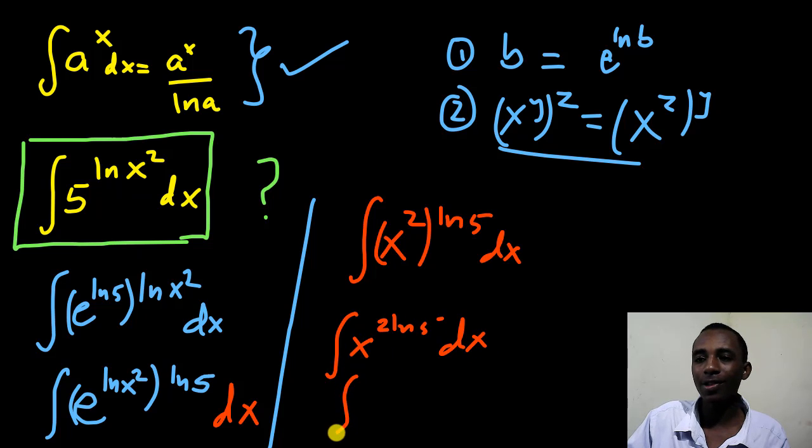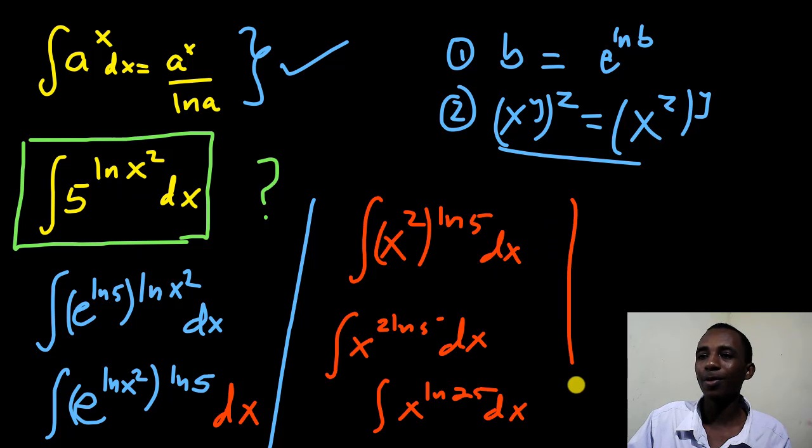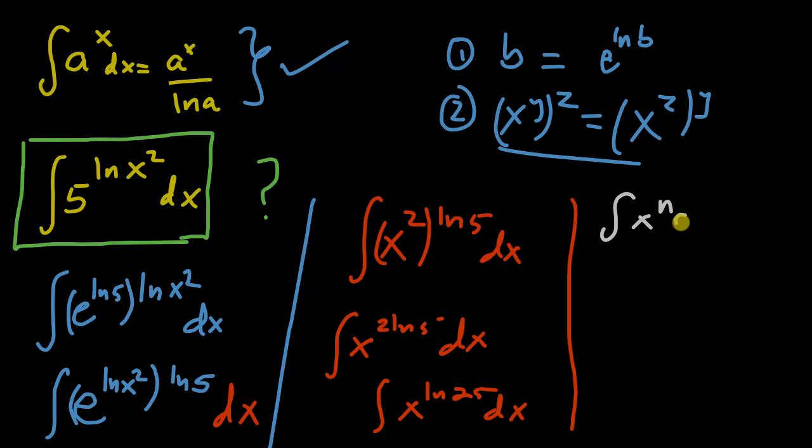And of course, this is the integral of x to the power natural log of 5 squared, which is 25. So we all know that the integral of x to the power n is the same as x to the power n plus 1 divided by n plus 1.